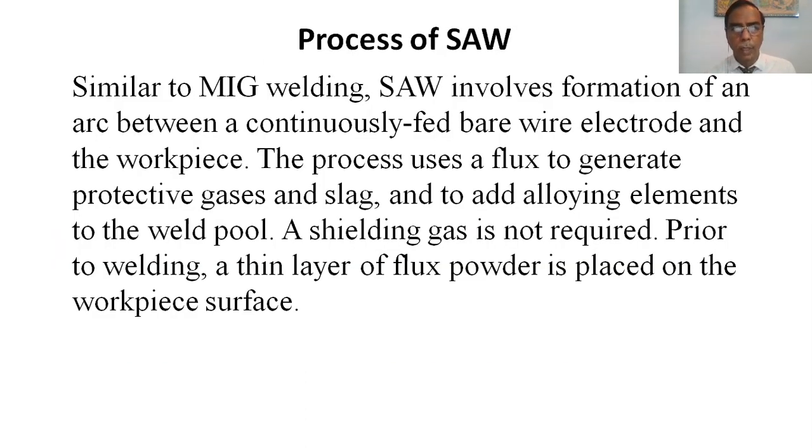Process of Submerged Arc Welding. Similar to MIG welding, SAW involves formation of an arc between a continuously-fed bare wire electrode and the workpiece. The process uses a flux to generate protective gases and slag and to add alloying elements to the weld pool. A shielding gas is not required. Prior to welding, a thin layer of flux powder is placed on the workpiece surface.